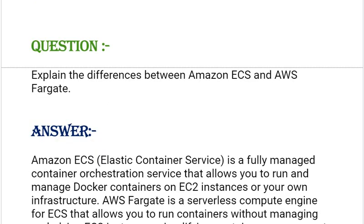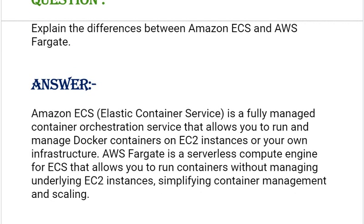Our next interview question is: explain the differences between Amazon ECS and AWS Fargate. Your answer should be: Amazon ECS, Elastic Container Service, is a fully managed container orchestration service that allows you to run and manage Docker containers on EC2 instances on your own infrastructure.